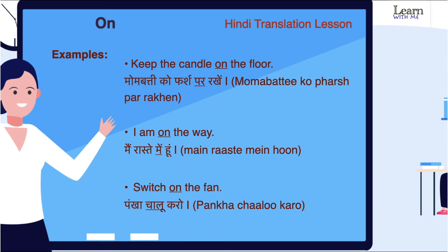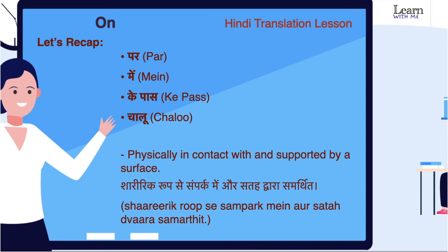Now let us understand through examples. To recap: ON का मतलब PAR, MAIN, KE PAS, or CHALO होता है. ON means physically in contact with and supported by a surface — SHARERIK ROOP SE SAMPAK MEN OR SATYA DWAARA SAMVARTHIT HOUNA — usko hum ON kehtay hain.